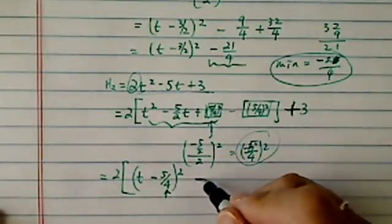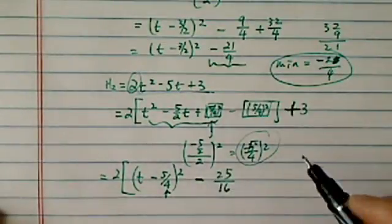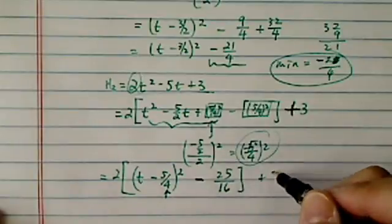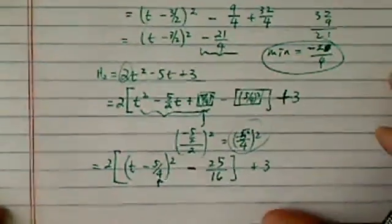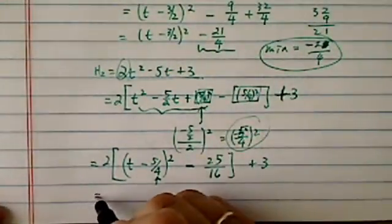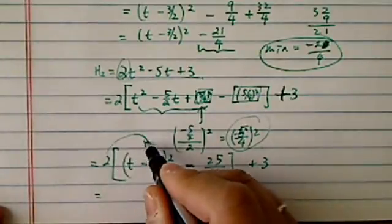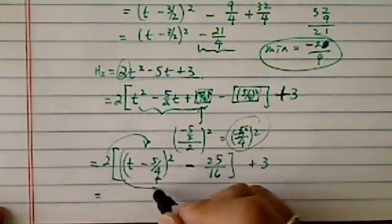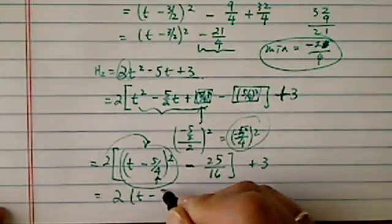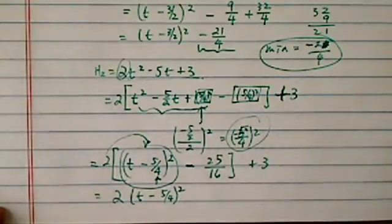And then I have minus, let us multiply this one out. It is 25 over 16 plus 3. And then a couple more steps and we are done. Let us multiply this 2. Do not open this parenthesis. Leave it alone because it is already in a perfect square.